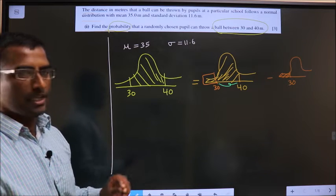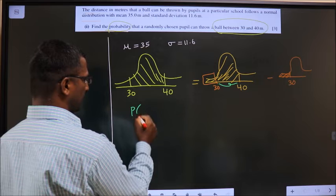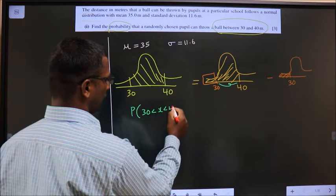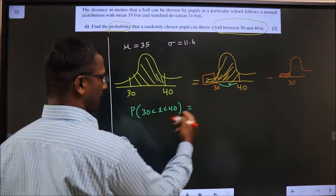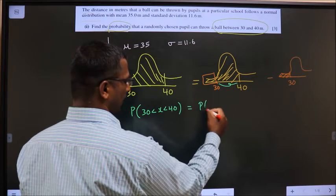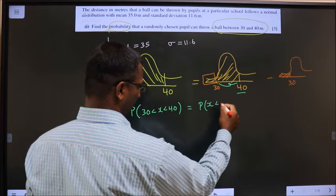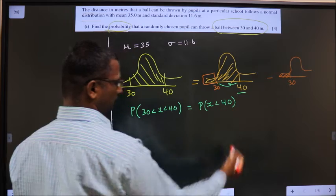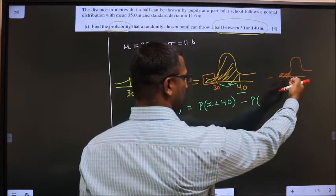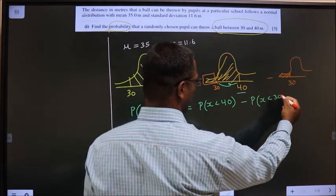Now, how do I represent it means? This is between 30 and 40, so 30 less than x less than 40 is nothing but this thing is entire on the left side of 40. So, x less than 40 minus P of this is entire on the left side of 30. So, x less than 30.